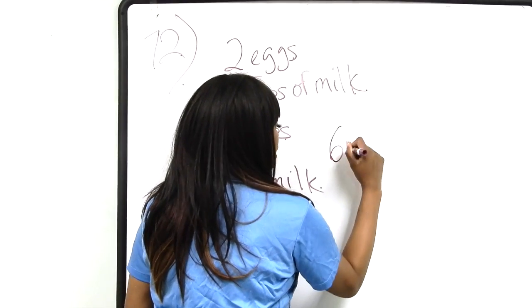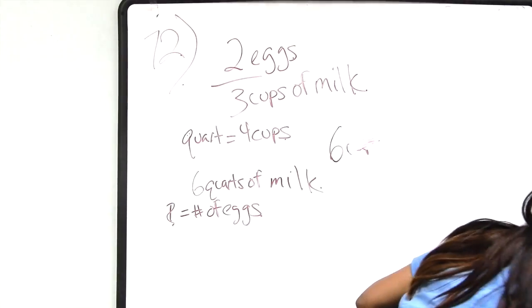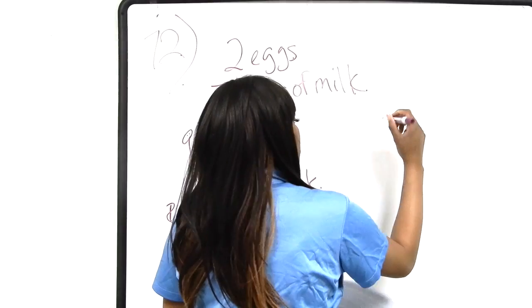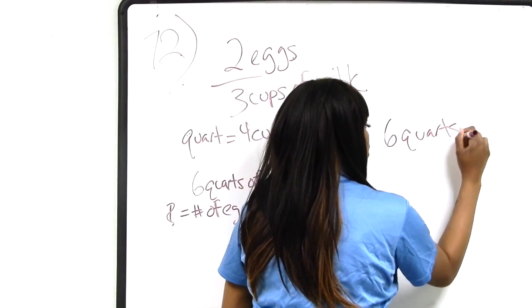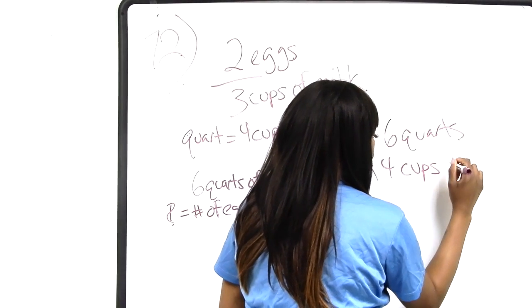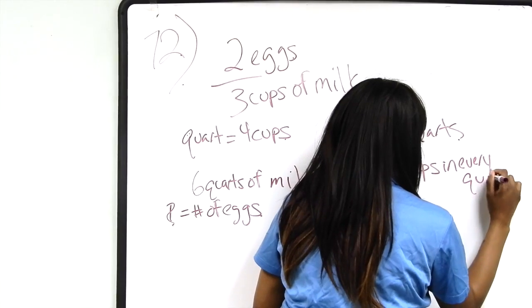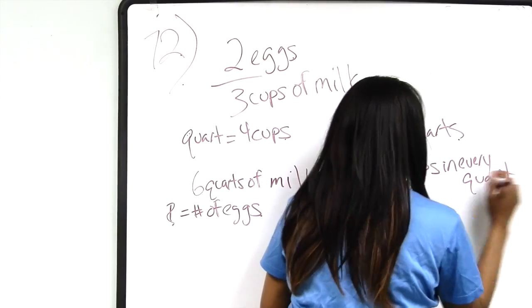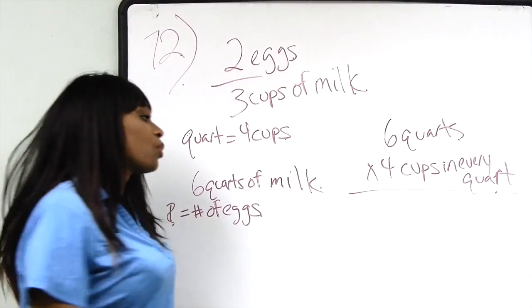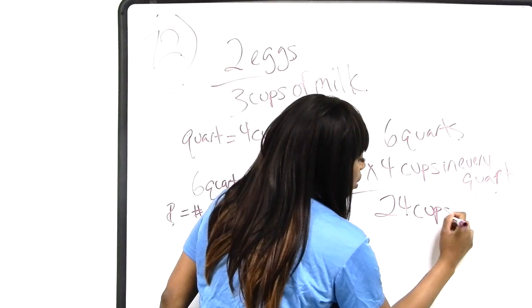Six quarts of milk times four cups in every quart — six times four gives us 24. So we have 24 cups of milk.